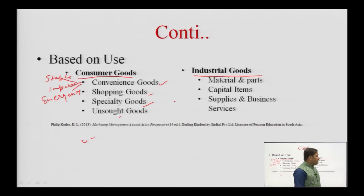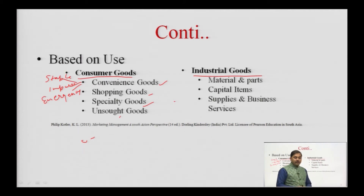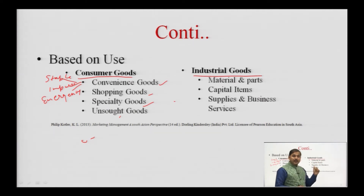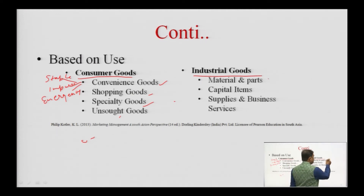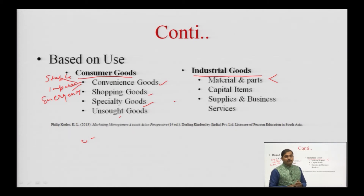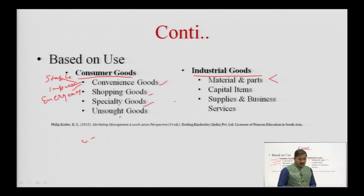The next category is industrial goods. Industrial goods are classified based on their relative cost and how they are required in the production process. The first type is materials and parts — goods that enter the manufacturer's products completely. There are two subtypes: raw materials and manufactured material parts.